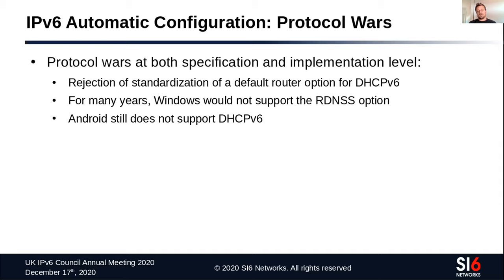At some point, because Windows wouldn't support the RDNSS option, if you wanted to provide recursive DNS server addresses to Windows systems, the only options were to deploy stateless DHCPv6 or rely on that information being provided via DHCPv4 — meaning you would only have IPv4 addresses for DNS servers. Android still nowadays does not support DHCPv6.